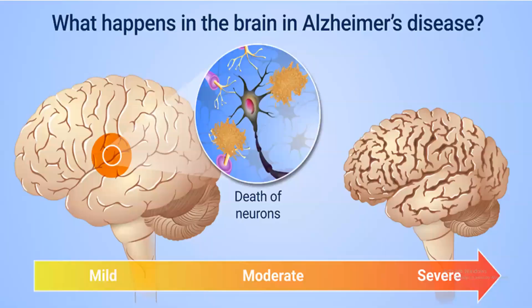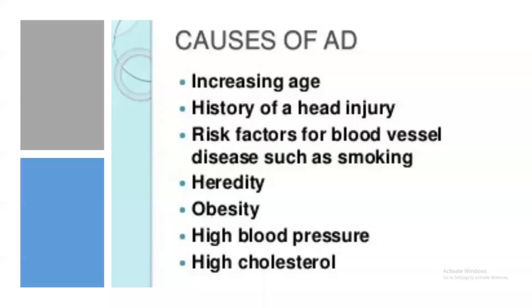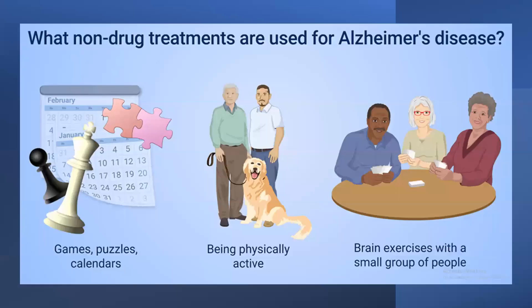In Alzheimer's disease, there is death of neurons starting from mild to moderate and then becoming severe — all the neurons, the main cells of the brain, die. Causes include increasing age, history of head injury, and risk factors for blood vessel disease such as smoking, heredity, obesity, high blood pressure, and high cholesterol.